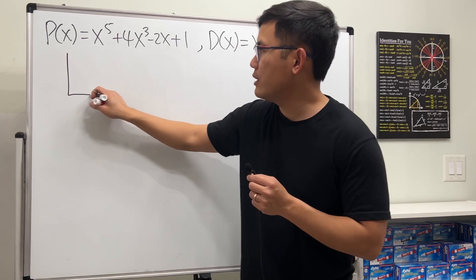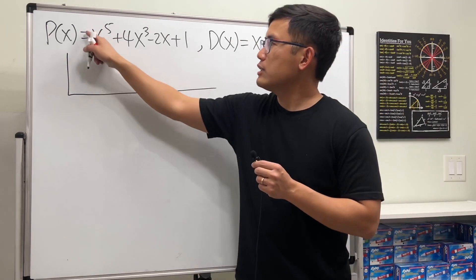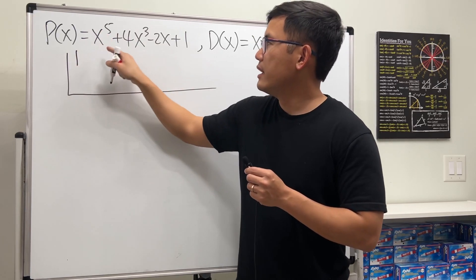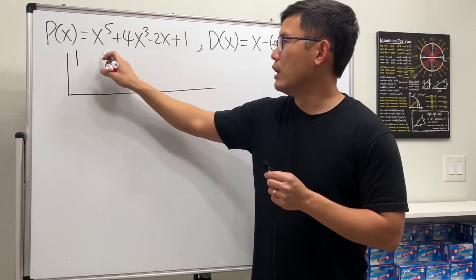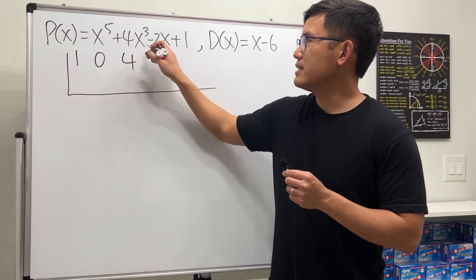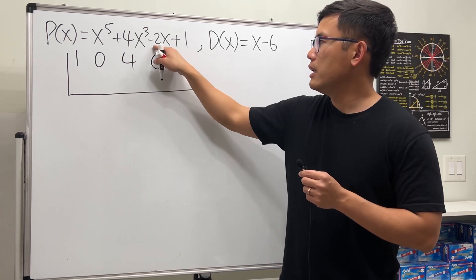I will put it down right here for you guys. Let's write down the coefficients. The fifth degree term right here is 1, and then we don't have the fourth degree term, so I will just put 0. Then we will have the 4, but there's no x squared, so again that will be 0.